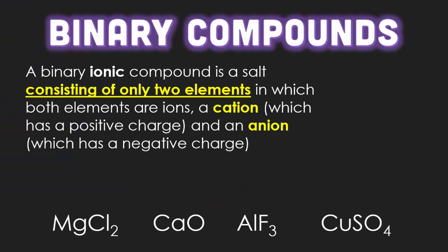Before we start, we need to understand what a binary compound is. A binary ionic compound is a salt consisting of only two elements, in which both elements are ions — a cation, which has a positive charge, and an anion, which has a negative charge. This is why an ionic compound is made up of a metal and a nonmetal.